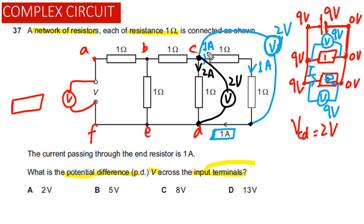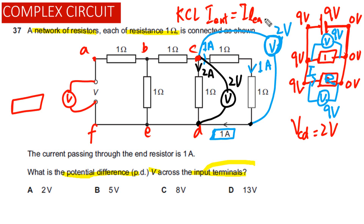Current passing through one resistor is 1 amp and through another is 1 amp, while current passing through this resistor is equal to 2 amps. Applying KCL at this junction — current entering equals current leaving — so current entering is equal to 2 plus 1, which is 3 amps.